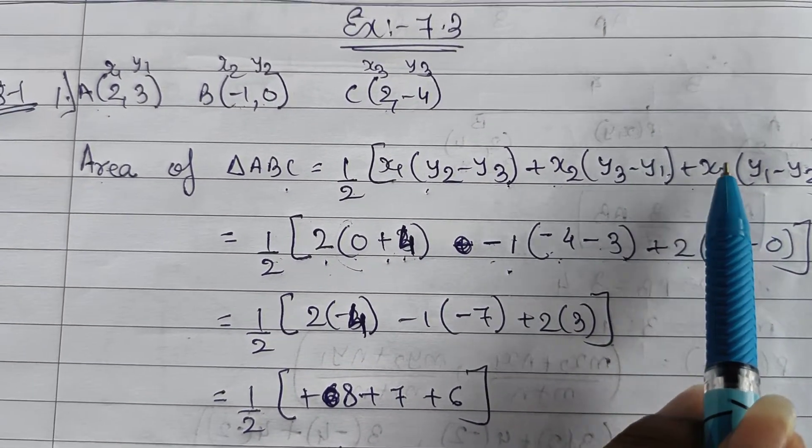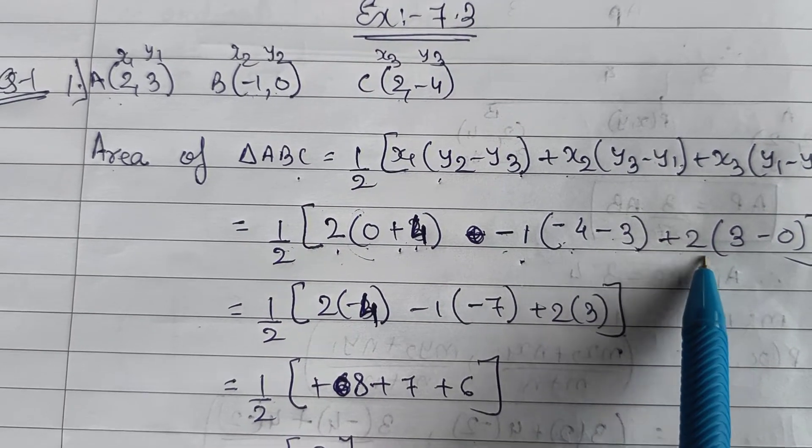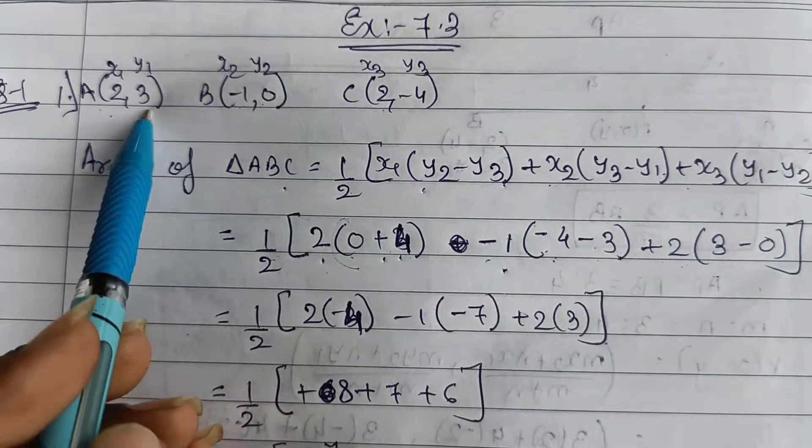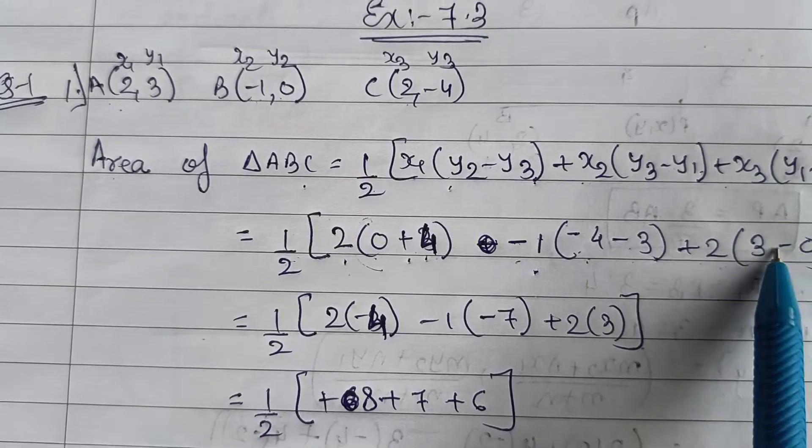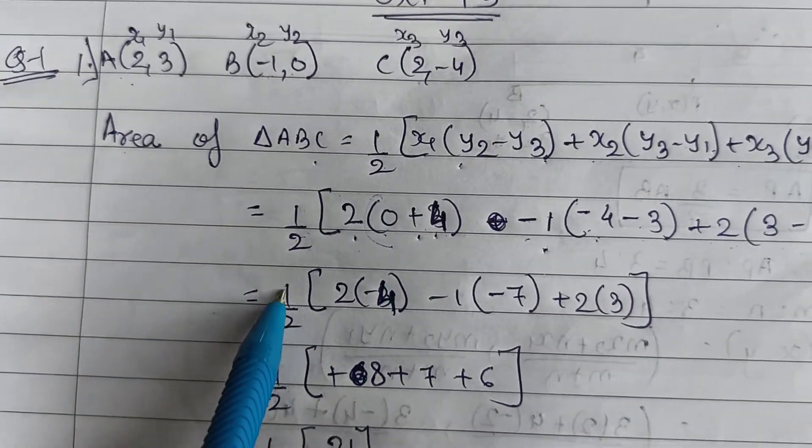Sorry, plus x3. So x3 is 2 over here, so 2 into y1, y1 is 3 minus y2, y2 is 0, so 3 minus 0 over here. Now solve this.